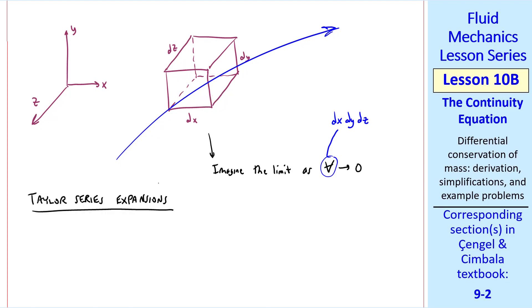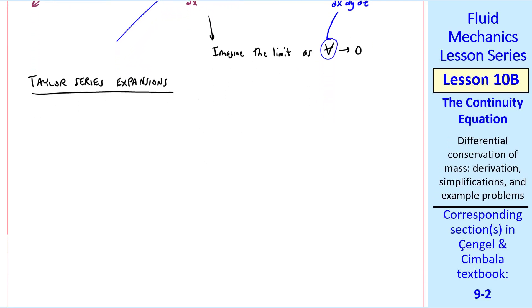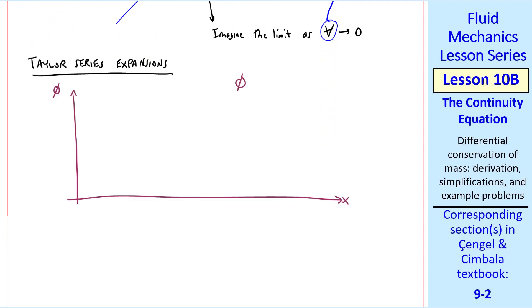We'll use Taylor series expansions to study the mass flow across each face. I'll review Taylor series expansions quickly. Suppose we have some function phi equal phi of x, that looks something like this. This point is phi when x equals zero. The slope at x equals zero is d phi dx, the derivative, at x equals zero.